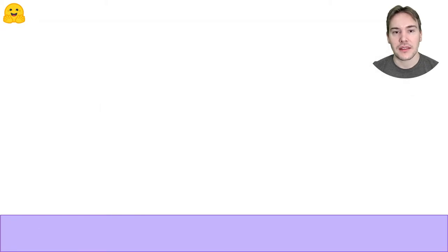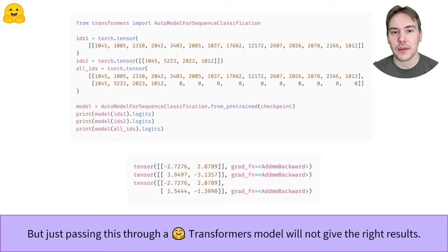Now that we have padded our sentences, we can make a batch with them. If we pass the two sentences to the model separately and batch together, however, we notice that we don't get the same results for the sentence that is padded, here the second one. Is that a bug in the transformers library?